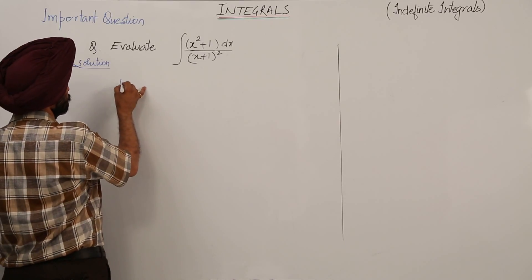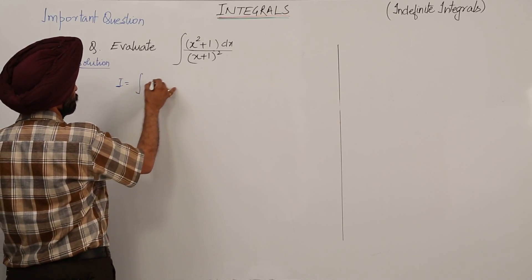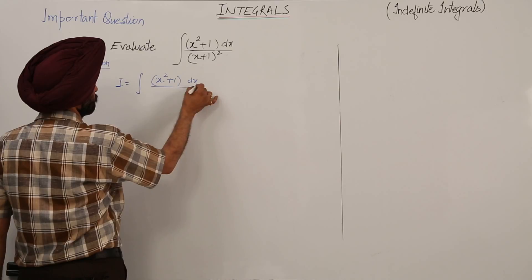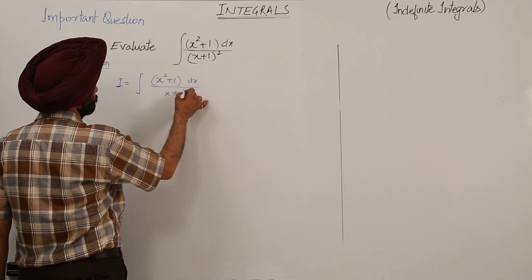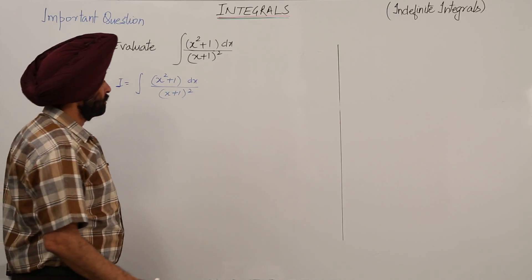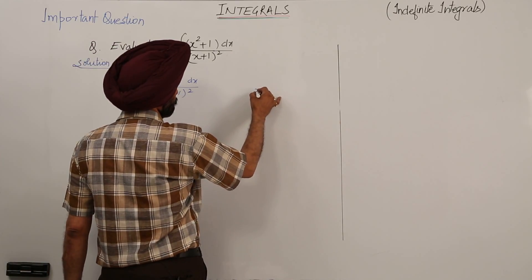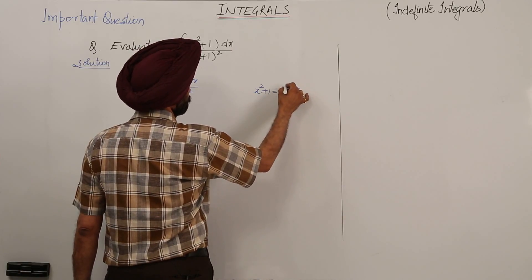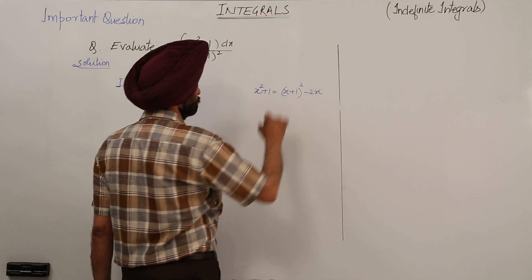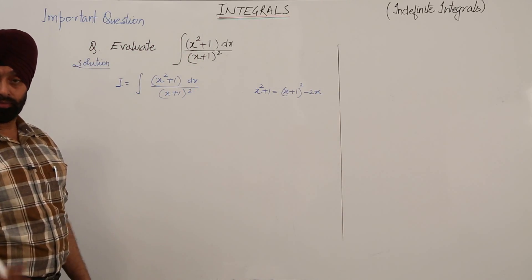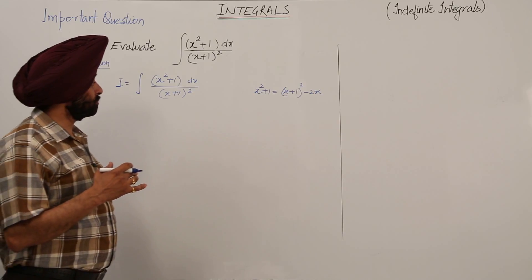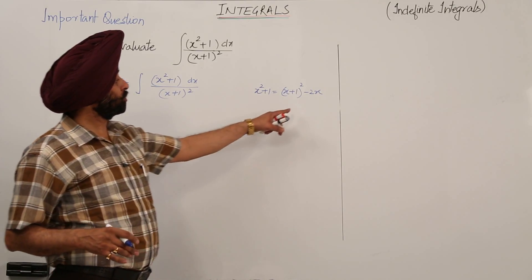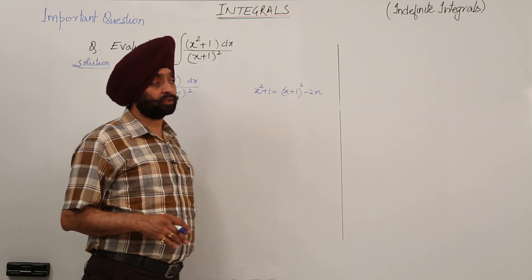The question is integration of (x² + 1) dx upon (x + 1)². Now x² + 1 can be written as (x + 1)² minus 2x, because (a + b)² = a² + b² + 2ab, so the 2ab term moves to the other side and becomes minus 2ab.